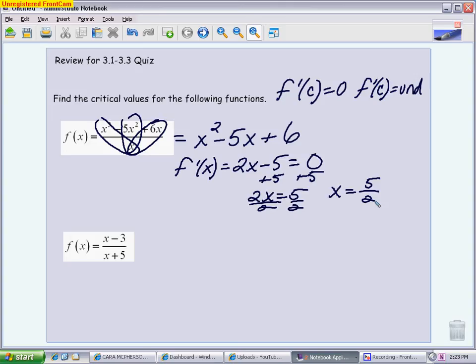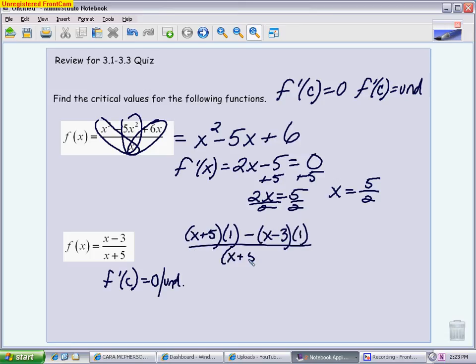The next question is a rational one. And again, the temptation is to start to find critical values right away before you derive. You need to take the derivative first so we can figure out when the derivative equals 0 or undefined. The way I take the derivative here is I need a quotient rule. I can't avoid a quotient rule on this one. So it's bottom times the derivative of the top minus the top times the derivative of the bottom all over the bottom squared. We're going to simplify the top. This is why the simplifying was so important last chapter because now it's going to help us find these critical values. I get x plus 5 minus x plus 3, which is going to give me just an 8 on top, and I'm going to keep the bottom as x plus 5 squared.